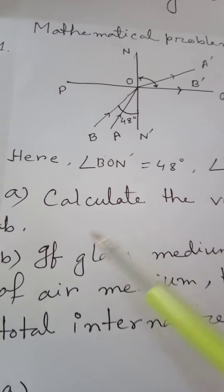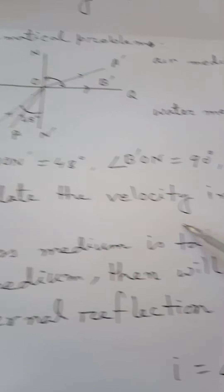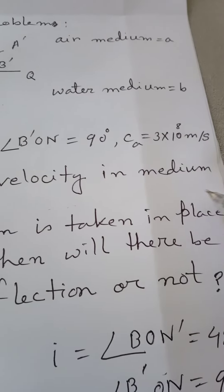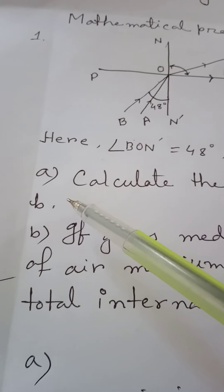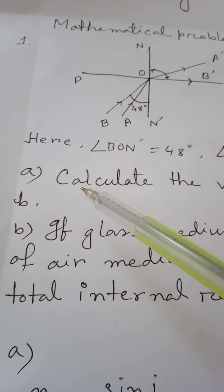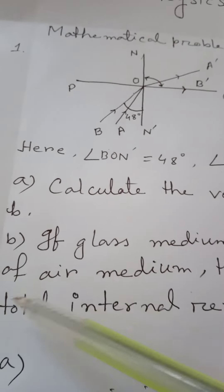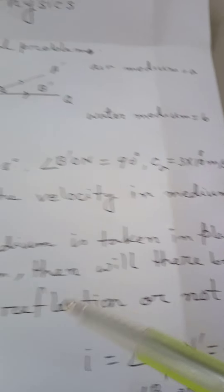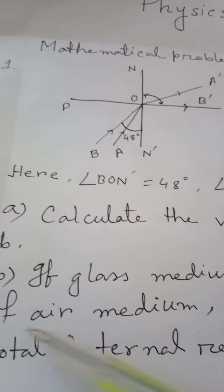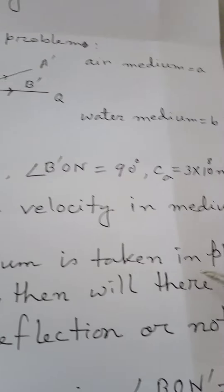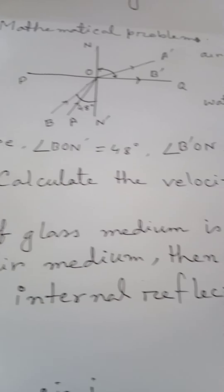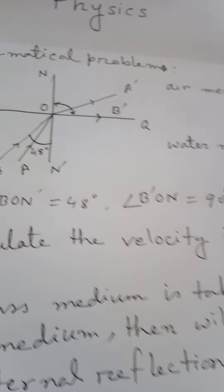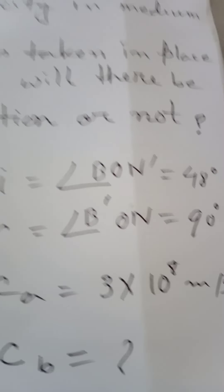This is the problem statement and there are two parts. In part A, calculate the velocity of light in medium B. In part B, if glass medium is taken in place of air medium, then will there be total internal reflection or not? Let's solve part A first.